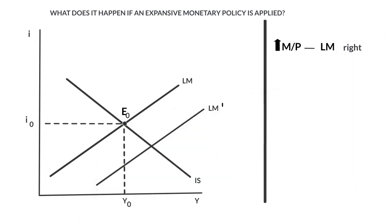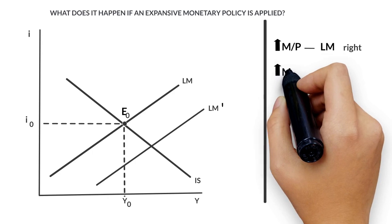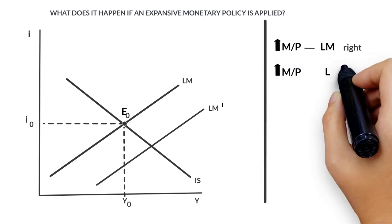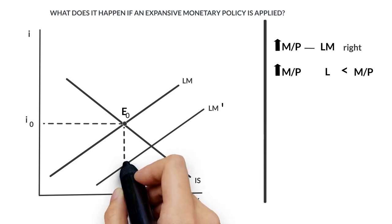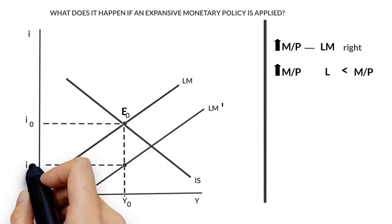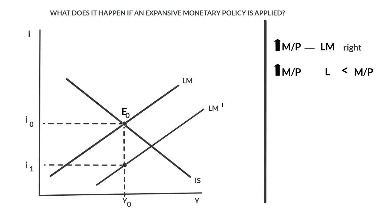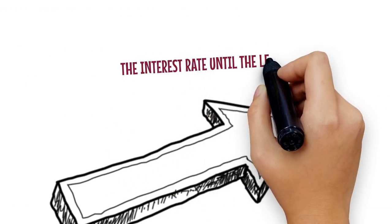Now the point E0 does not represent an equilibrium point in the money market, since the increase in the money supply means that money demand is lower than money supply in the money market. This imbalance is quickly adjusted through a decrease in the interest rate until the level I1.